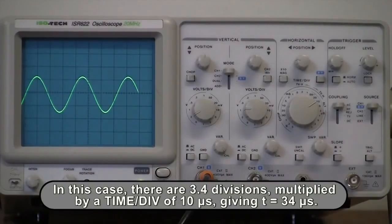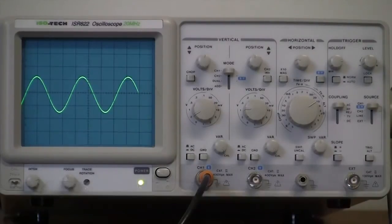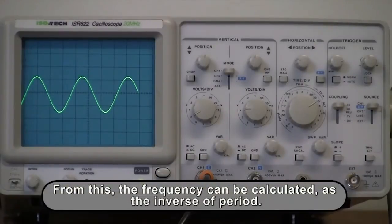In this case, there are 3.4 divisions, multiplied by a time per division of 10 microseconds, giving a period of 34 microseconds. From this, the frequency can be calculated as the inverse of the period.